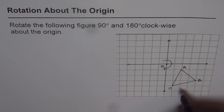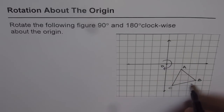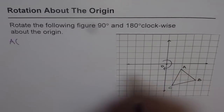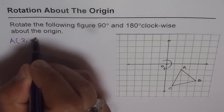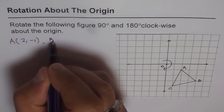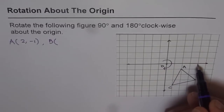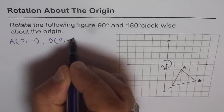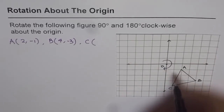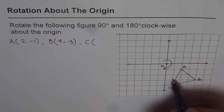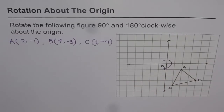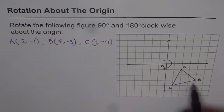Before that, let's write down the current location — the coordinates of points A, B, and C. A is at (2, -1): 2 for X and minus 1 for Y. Point B is at (4, -3). And point C is at (1, -4) — right means positive, down means negative. So these are the current positions for the vertices of the triangle.